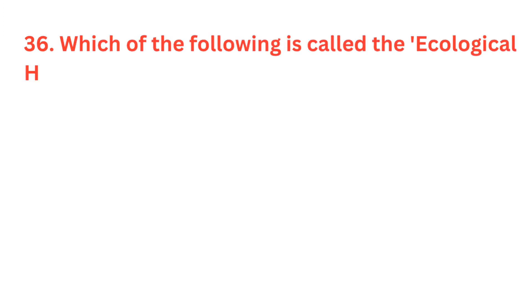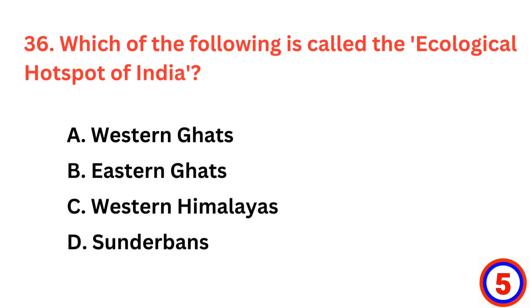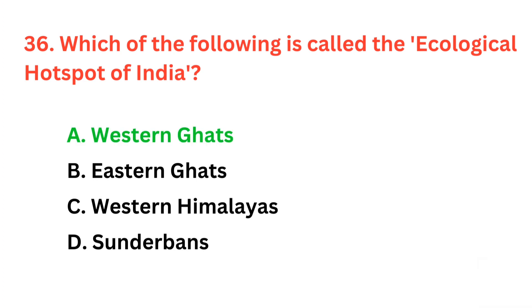Which of the following is called the ecological hotspot of India? The correct answer is option A, Western Ghats.